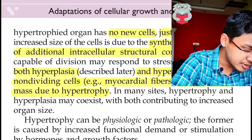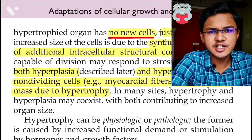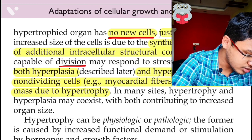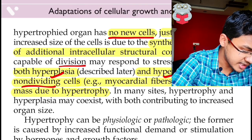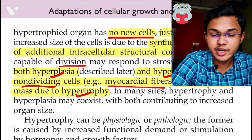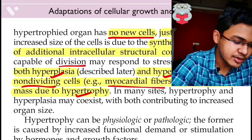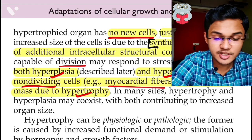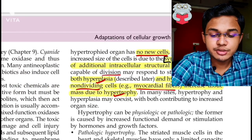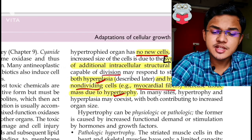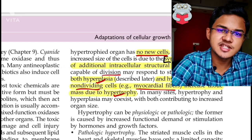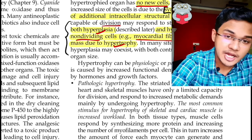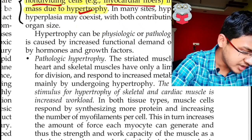The gist of that paragraph is: in hypertrophy, no new cells are formed — just the size of cells is increased, which is basically the definition, so we don't need to write it again. Dividing cells can undergo both hyperplasia and hypertrophy, whereas non-dividing cells can undergo hypertrophy only — example: myocardial fibers. The mechanism of hypertrophy is due to synthesis and assembly of additional intracellular structural components, and I will write that in my notes.